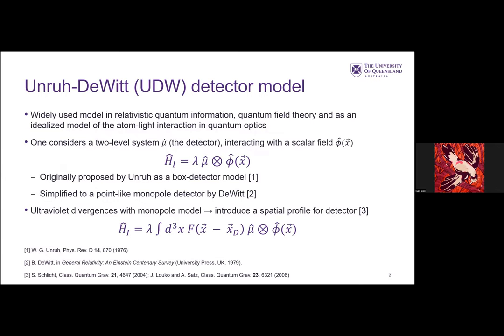The basic idea is that we have some two-level system, being the detector, interacting with a field, usually taken to be a scalar field. It was originally proposed by Unruh as a box detector model, but was simplified to be some point-like monopole detector by DeWitt.